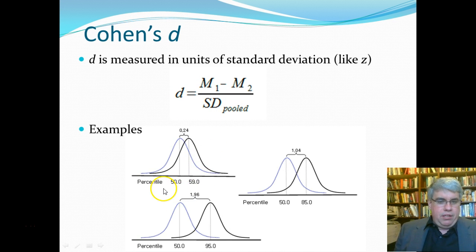This is what it looks like. For example, if we had a d of 0.24, we would see that there's about this much difference between the averages. A d of 1.04 is much larger, and we see that the lines cross at about one standard deviation. Remember, the standard deviation is where the line is perfectly straight, where it moves from convex to concave.